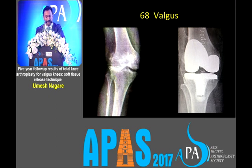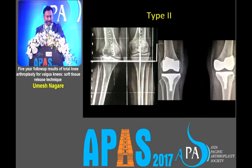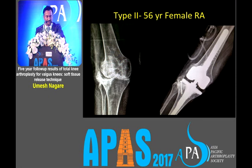A 68-year-old with valgus type 1 deformity. Then type 2 deformity: on the right side you can see the valgus deformity is less than 20 degrees and more than 10 degrees, so we used the same PS knee. One more case with rheumatoid arthritis, a patient with bilateral rheumatoid arthritis — type 2 patient.